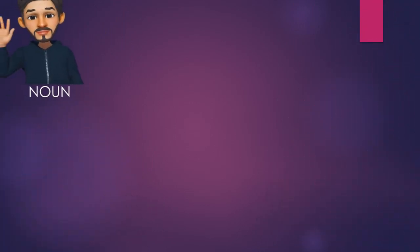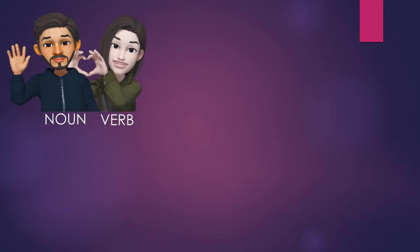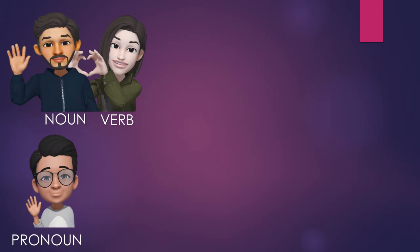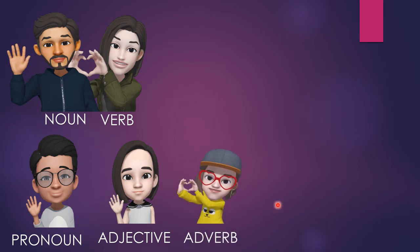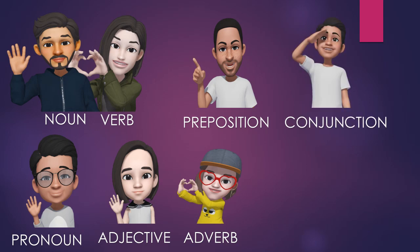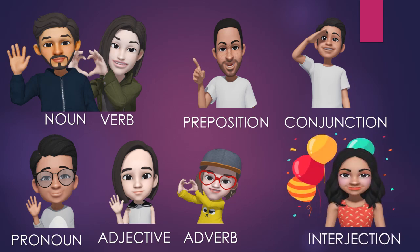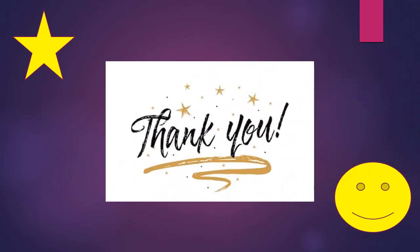Let's have a recap. Noun is a word used as the name of a person, place, or thing. Verb is a word used to express an action or state. Pronoun is a word used instead of a noun. Adjective is a word used to add something to the meaning of a noun. Adverb is a word used to add something to the meaning of a verb. Preposition is a word used to show a relationship between two words in a sentence. Conjunction is a word used to join words or sentences together. Interjection is a word which expresses some sudden feeling. Hope you all understand all the parts of speech!